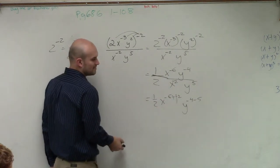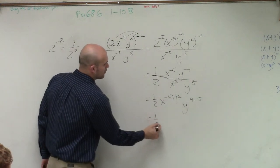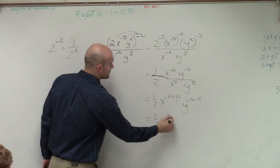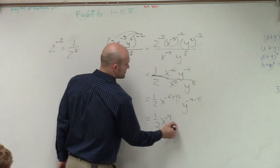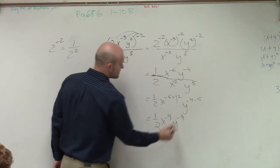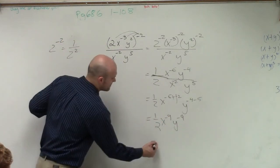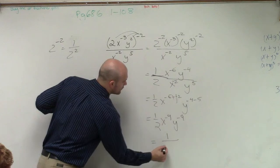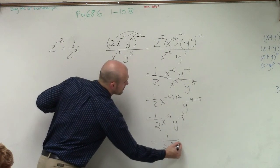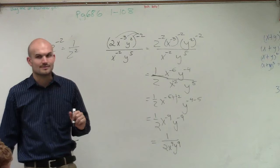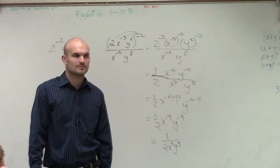Double negative turns positive. So I have 1 half x to the negative fourth. And this becomes y to the negative ninth. Well, remember, since these are negative, they're going to go in the denominator. So my final answer is 1 over 2 x to the fourth y to the ninth. OK? Any questions?